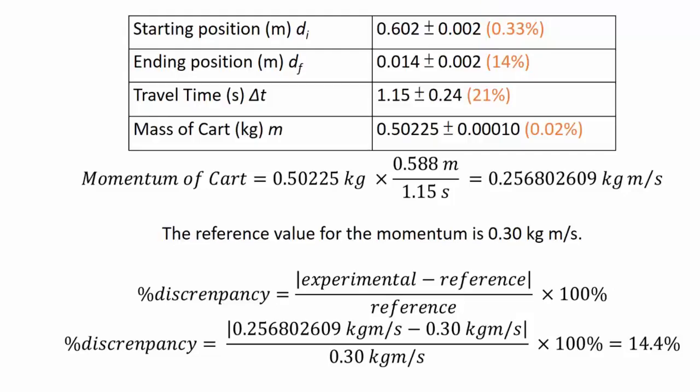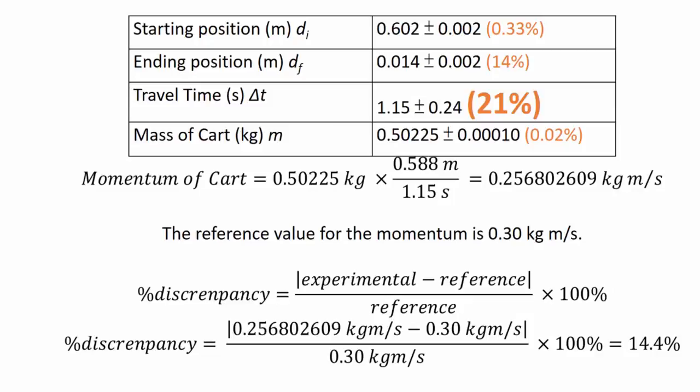And then, again, to simplify things, we simply just pick the biggest one. We don't add them up or anything, we just pick the biggest one. And in this case, the biggest one is the 21%.